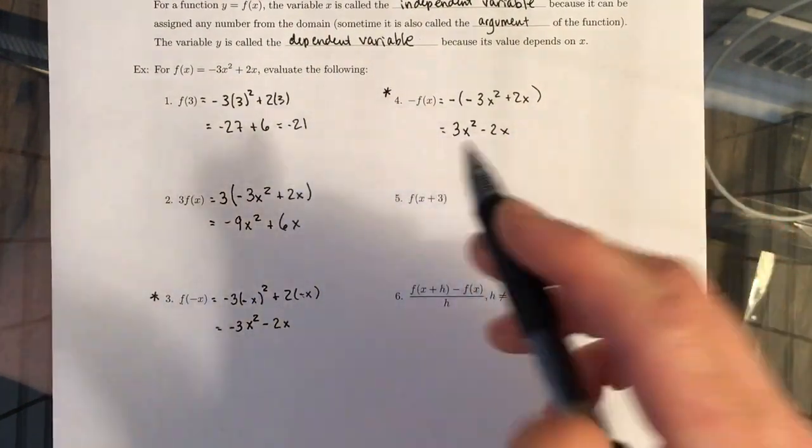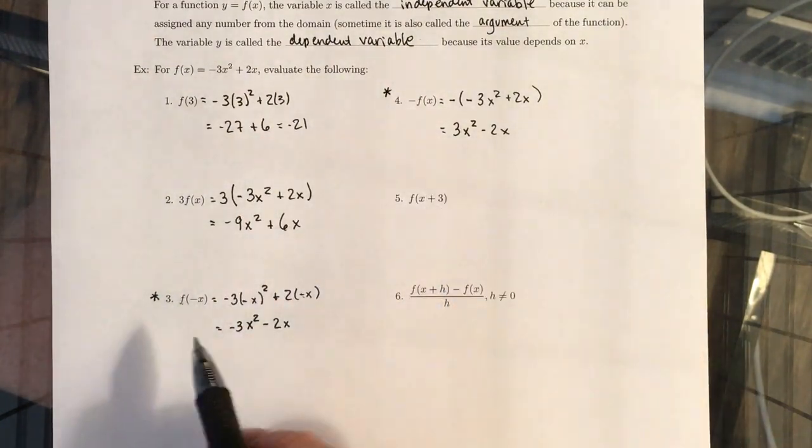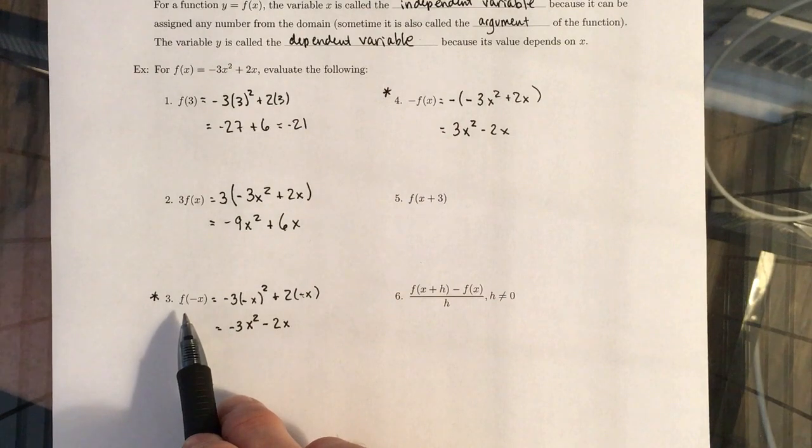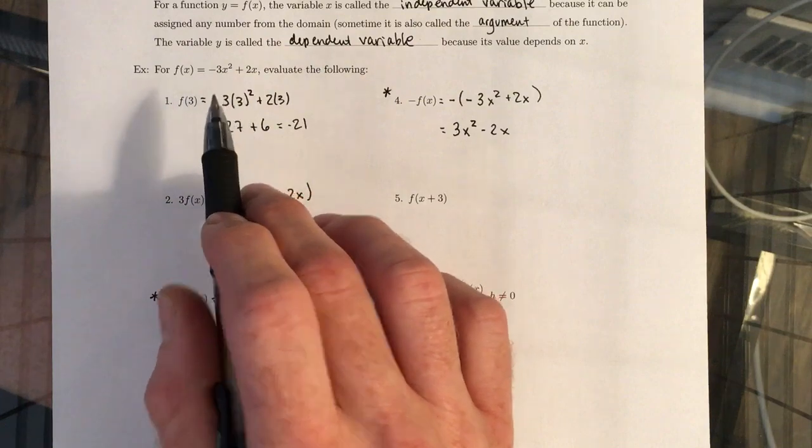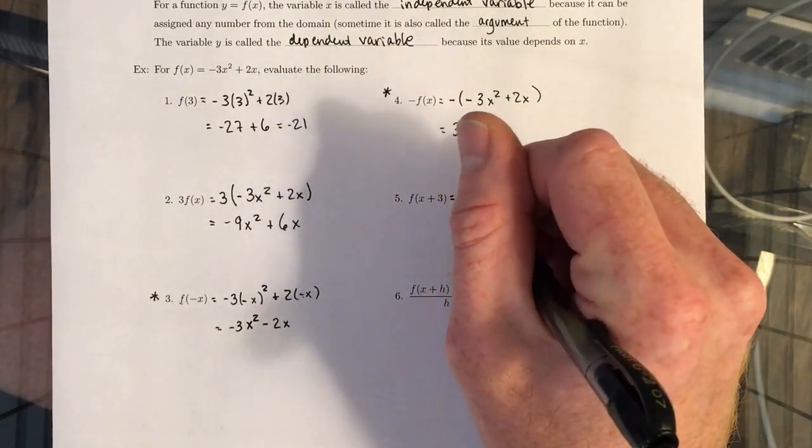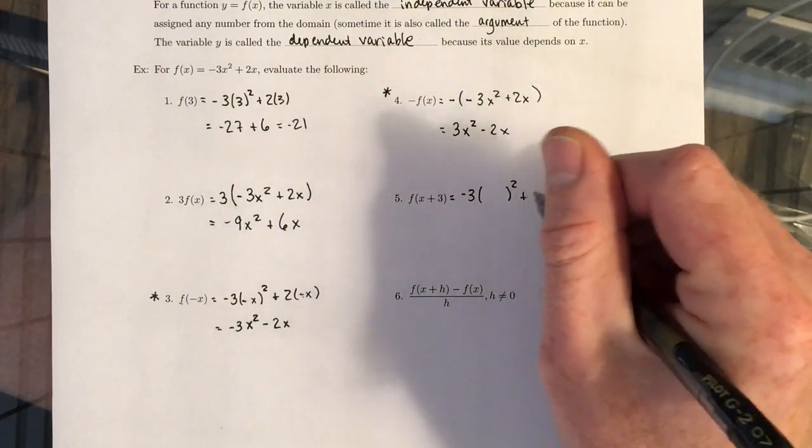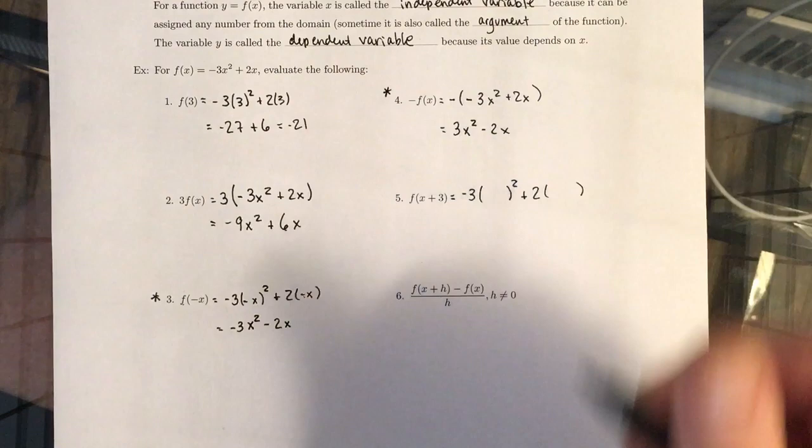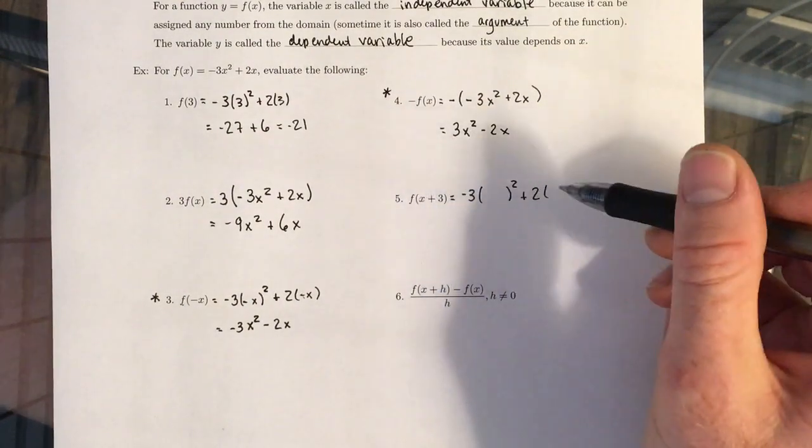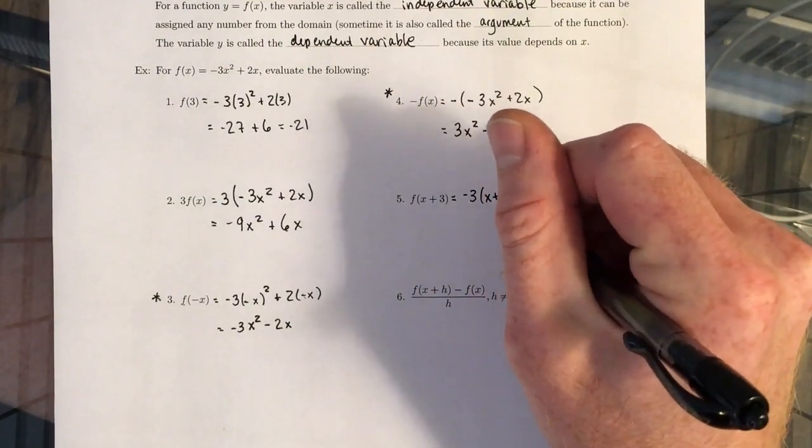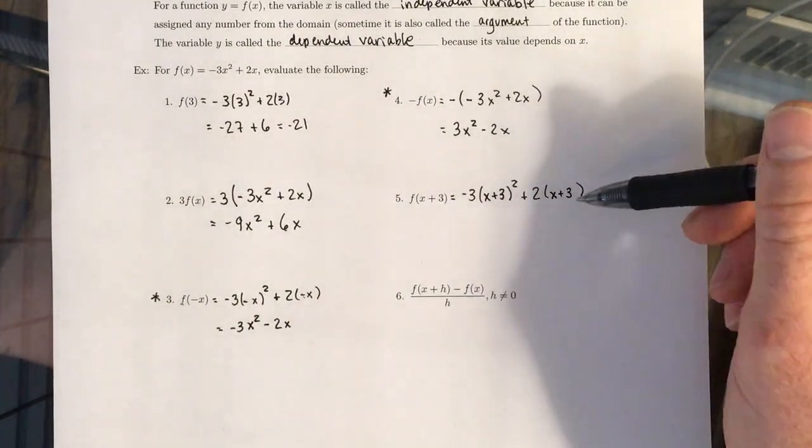Let's look at what happens when we plug X plus 3 into the function F. So just like we did for this example, we're just going to rewrite everything with parentheses wherever there was an X up here. So our function is negative 3 times whatever we have here squared plus 2 times whatever we have there. And what we have, what we want to plug in here is going to be X plus 3.